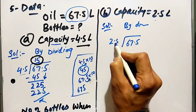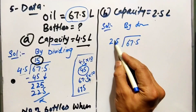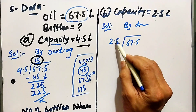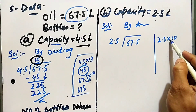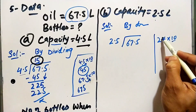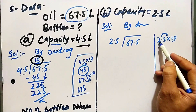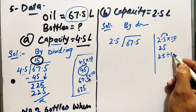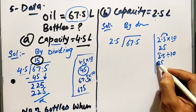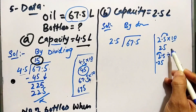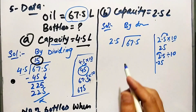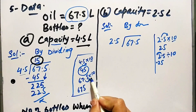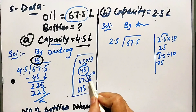If the capacity is 2.5 litres, divide 67.5 by 2.5. Multiply both by 10: 25 and 675. Alternatively, convert 2.5 to 0.25 by dividing by 10 — using the method from previous videos on dividing decimals by 10 or 100.